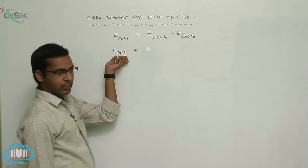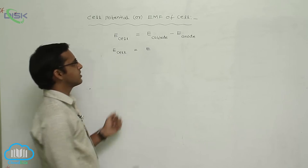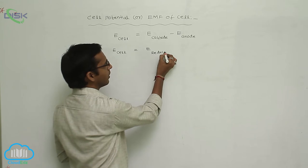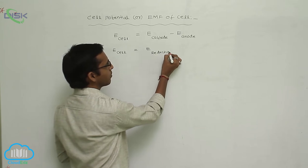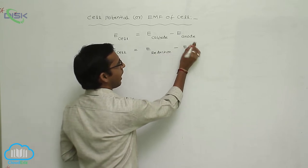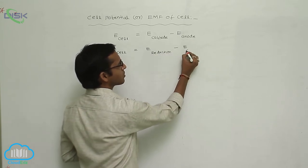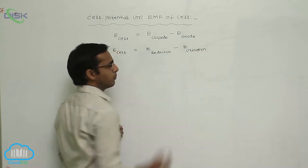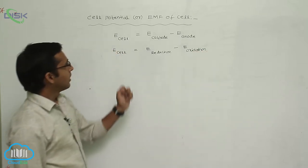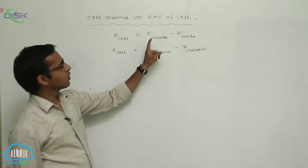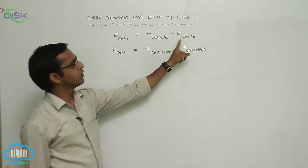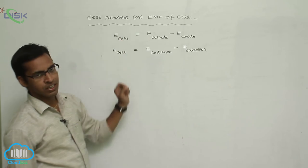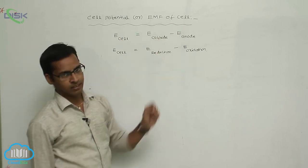Another mathematical equation: E cell equals E cathode — cathode means reduction — E reduction potential, minus anode means oxidation. The difference between the electrode potentials of the two electrodes is called cell potential or EMF of cell.